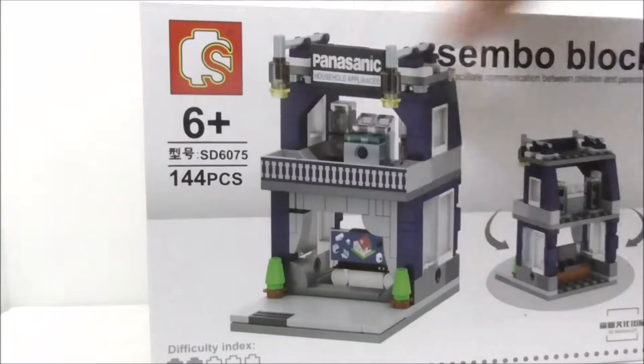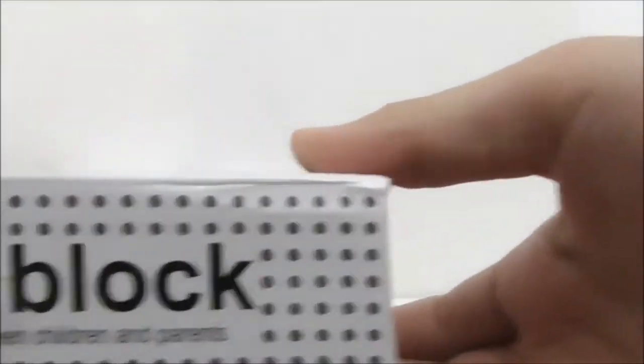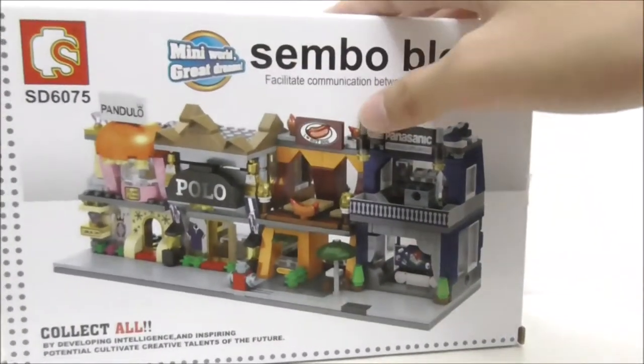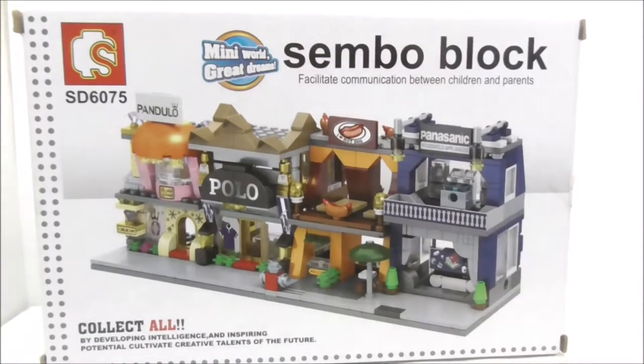You have the Sembo Block logo, and here it says SD Originality. This is the top, this is the side, you have the Sembo Block logo, this is the other side, this is the bottom, and finally this is the back. It shows you the rest of the set with all the other buildings.